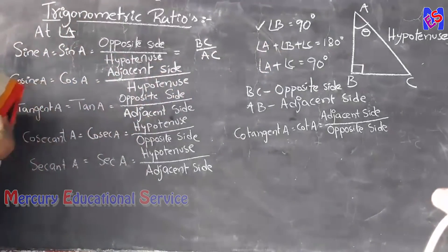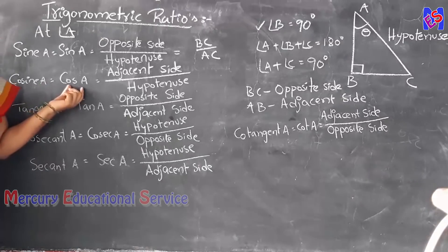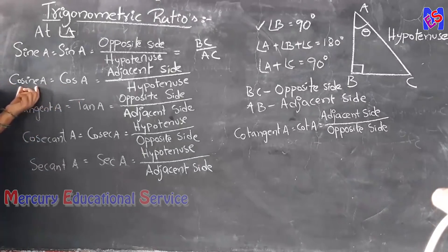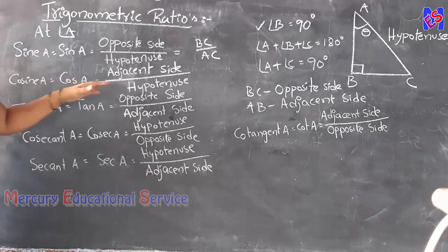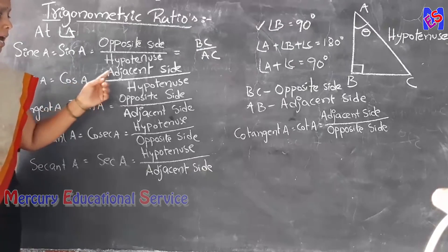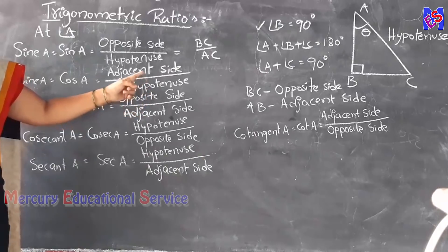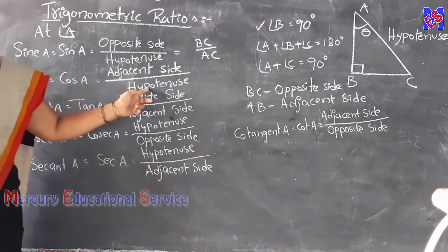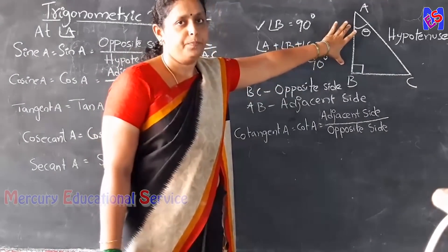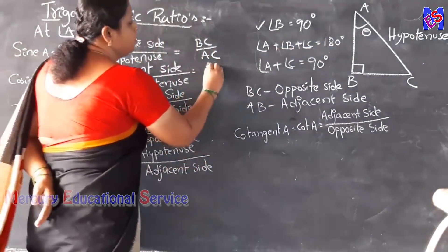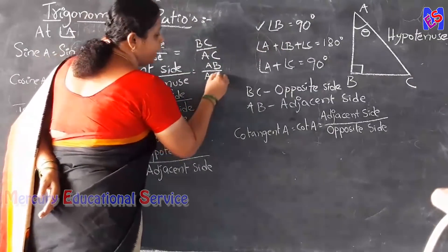Second ratio: cosine A, written in short form as cos A. The formula of cos A is adjacent side divided by hypotenuse. The adjacent side is AB and the hypotenuse is AC. So cos A equals AB by AC.